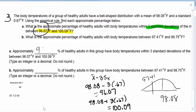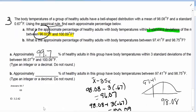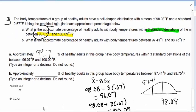So we say 99.7% of healthy adults in this group have body temperatures within three standard deviations of the mean, or between 96.07 and 100.09. Does every single healthy adult have a temperature of 98.3? No, there are going to be some healthy adults that are way out on that range. They could have 96.07. Now, very, very few, it's possible.